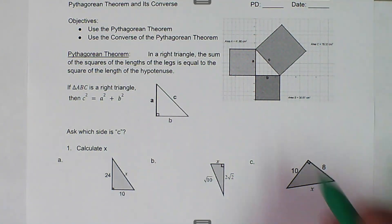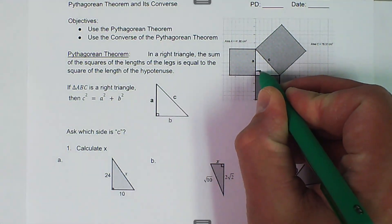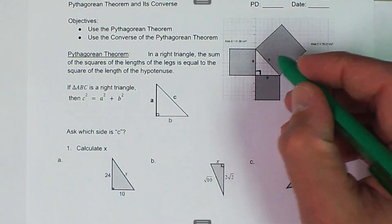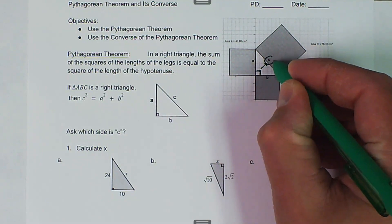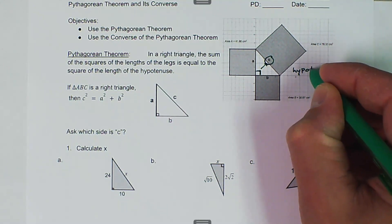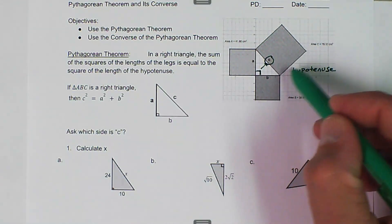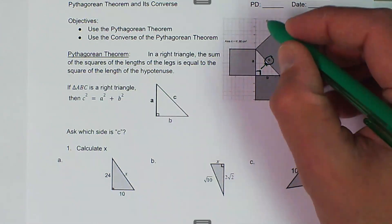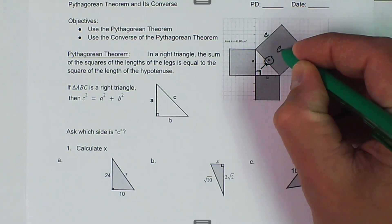Here we have a rough, very simple illustration of the proof of the Pythagorean Theorem. We have a right angle, so the hypotenuse is always the side that is opposite the right angle. So C, in this case, is the hypotenuse. We have this square here — this dimension is C and this dimension is C — and we can calculate the area. So the area of the square is C squared.